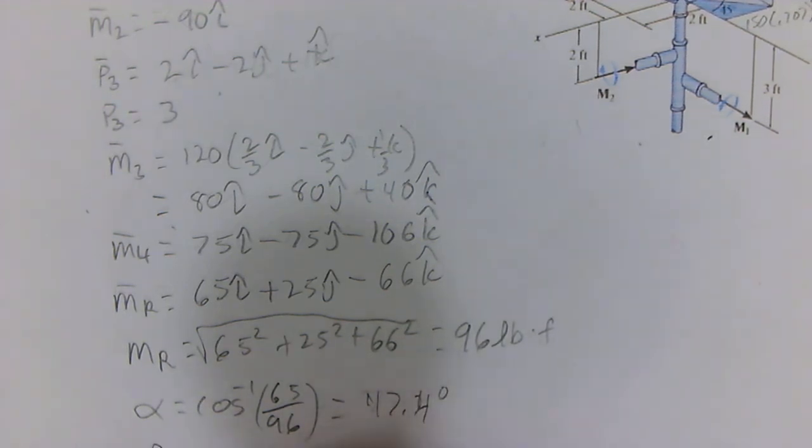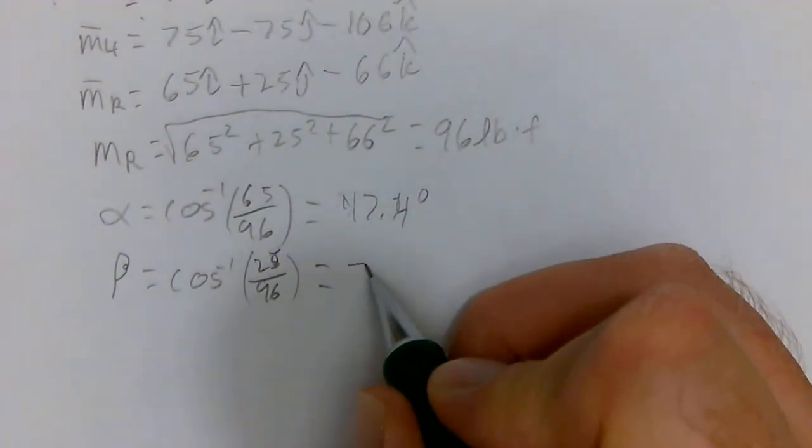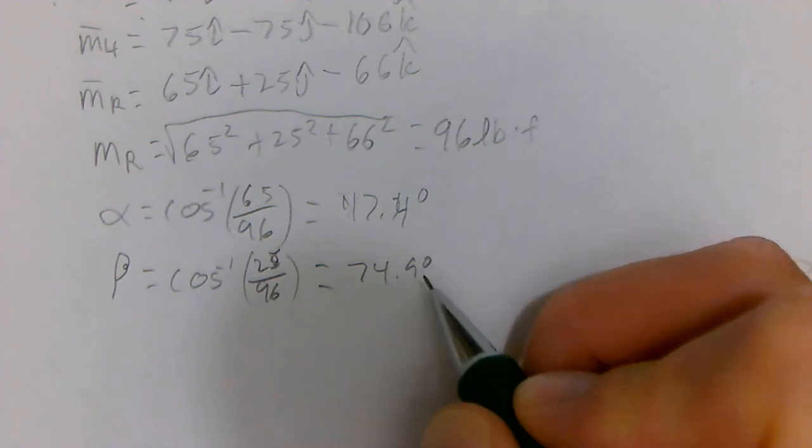Beta equals the inverse cosine of 25 over 96, which is equal to 74.9 degrees.